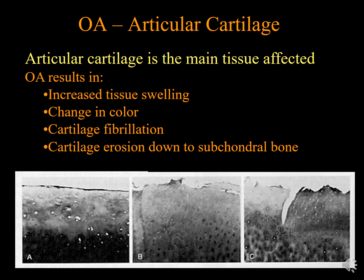The arthroscopy appearance of Osteoarthritis shows increased tissue swelling, changing color, and cartilage fibrillation, followed by cartilage erosion down to the subchondral bone. We can see the difference between smooth normal articular cartilage, early erosions in Osteoarthritis, and later, deeper erosions reaching the underlying bone. This illustrates the progression from normal articular cartilage to early Osteoarthritis and then to severe Osteoarthritis.